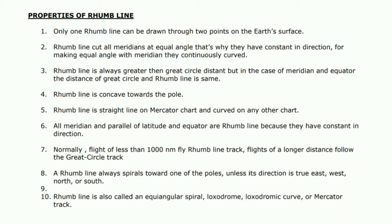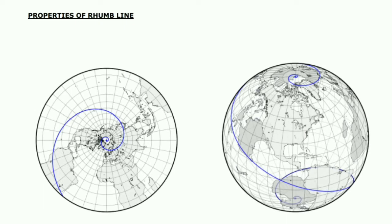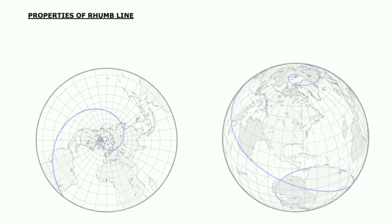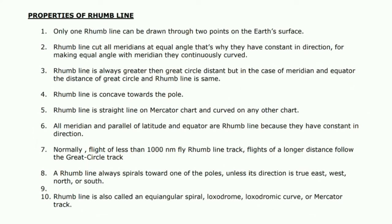Point number four — rhumb line is concave toward the pole. This is very important for the DGC exam. In the first picture you can see the rhumb line spirals to the north pole and it is concave toward the north pole. In the second picture you can see the rhumb line also spirals to the south pole and it is concave toward the south pole. So we can say the rhumb line is concave toward either pole.